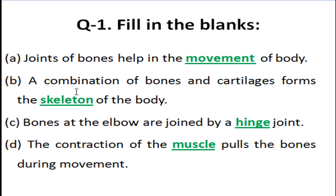Our third blank: bones at the elbow are joined by a blank joint. The answer is hinge joint. At the elbow, a hinge joint is present.